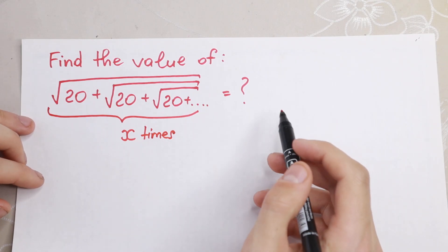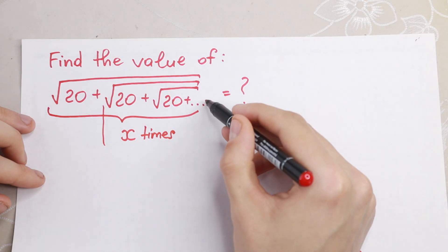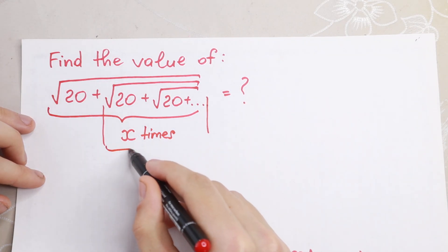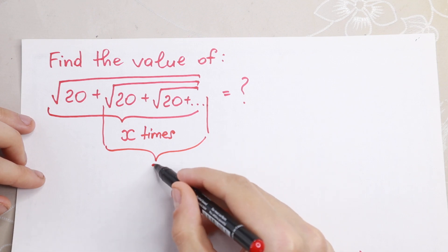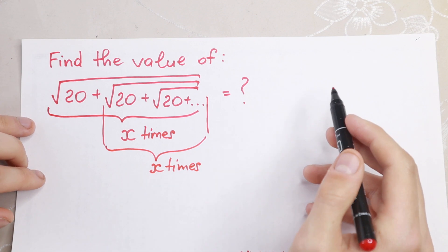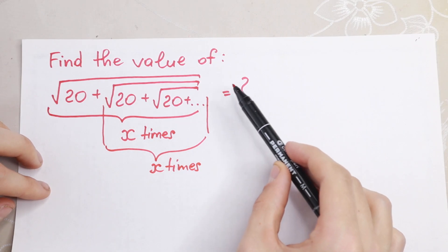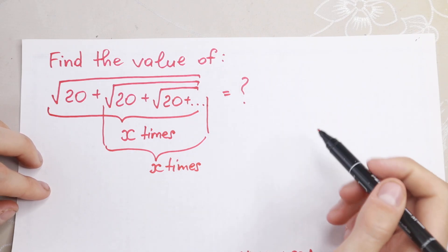Moreover, if you look here, from here—square root of 20 plus square root of 20—it goes to infinity as well, x times. Take a look, right here x, and right here will be the same x, because we have infinite elements. We add infinite elements.